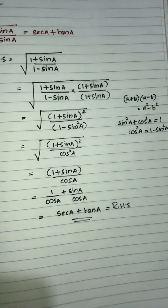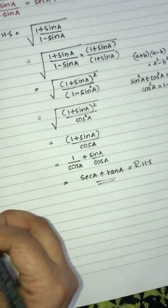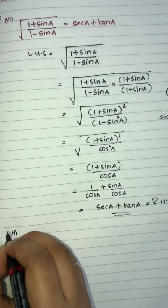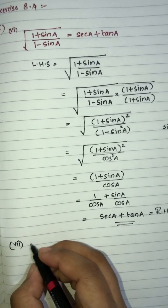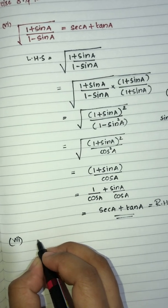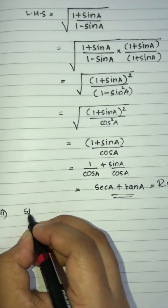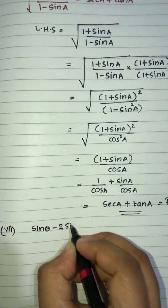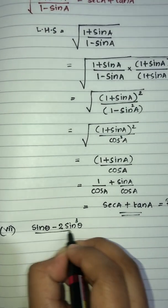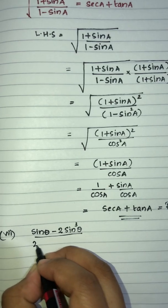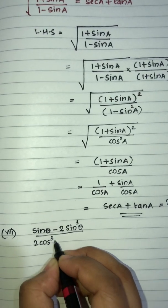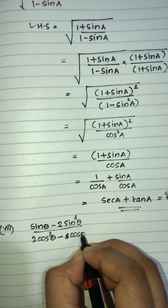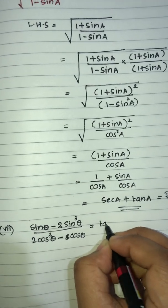Next question — the 7th question. We have: sin theta minus 2 sin cubed theta, divided by 2 cos cubed theta minus cos theta, is equal to tan theta.